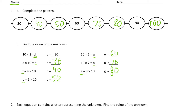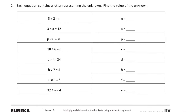Now each equation contains a letter representing the unknown — find the value of the unknown, same thing we were just doing. 8 divided by 2 equals n, so how many twos does it take to make 8? 2, 4, 6, 8 — it takes 4 twos. 3 times something is 12 — if you don't know it: 3, 6, 9, 12 — that's 4 threes. And something times 8 is 40 — how many 8s does it take to make 40?